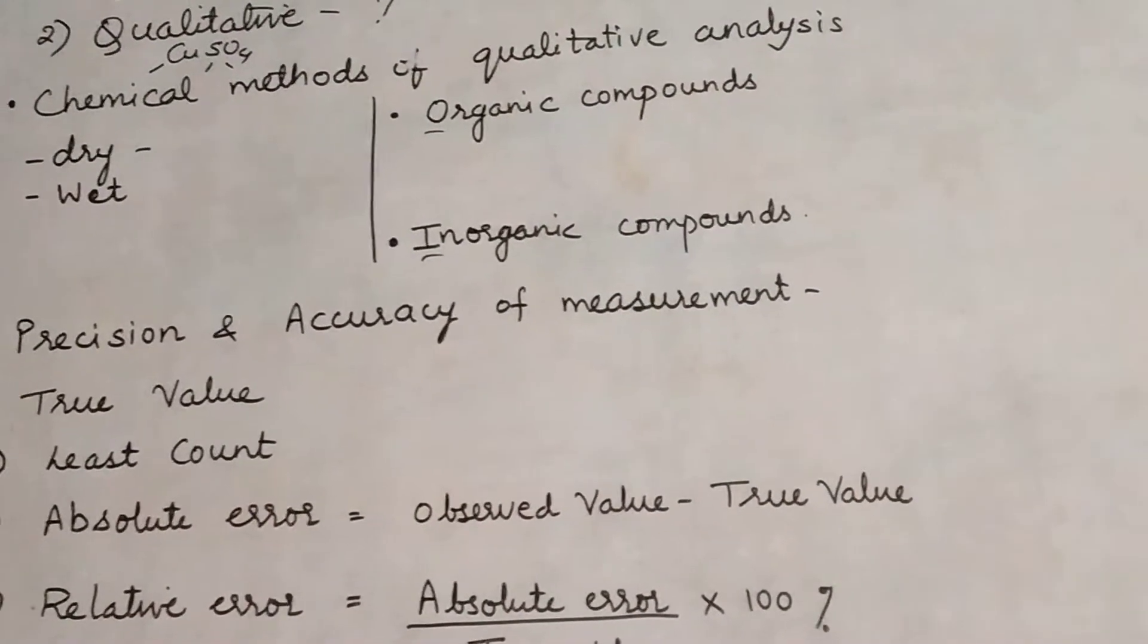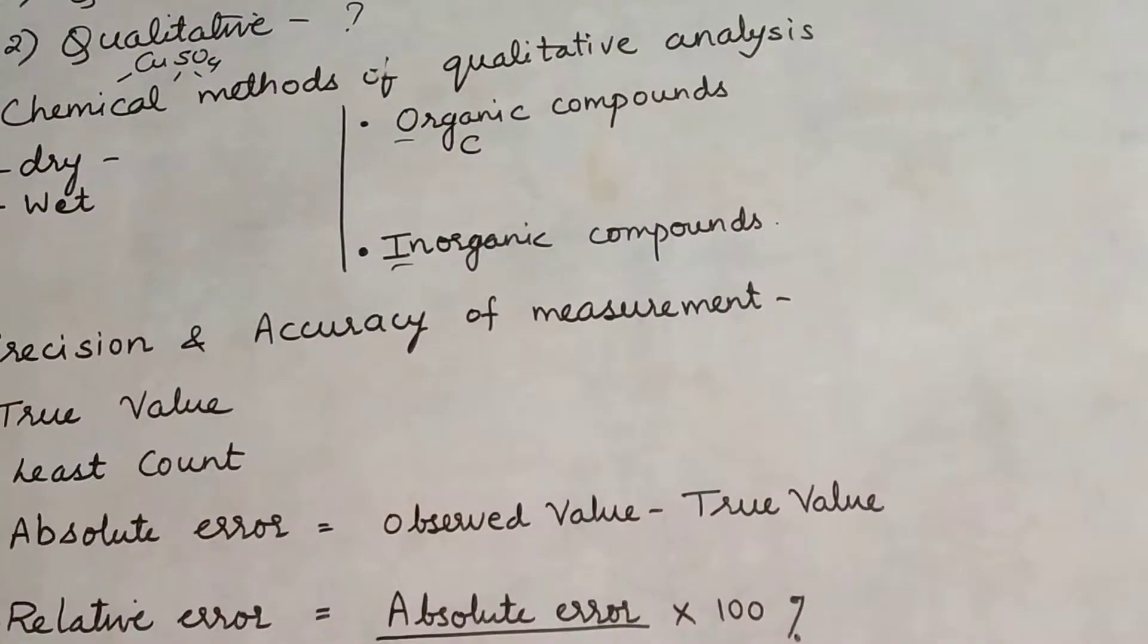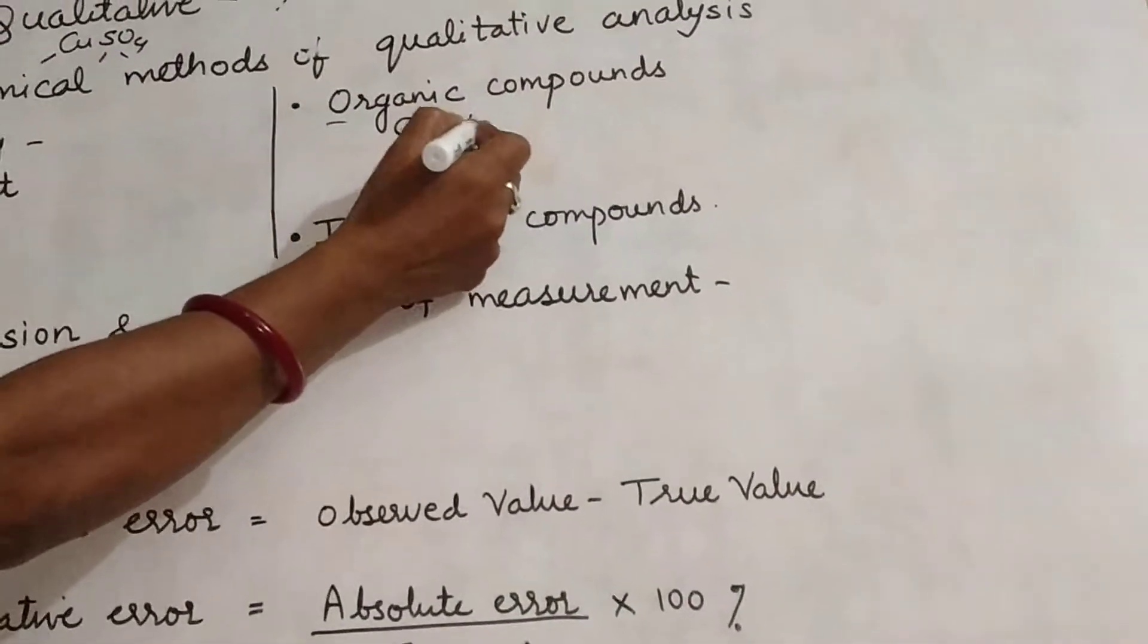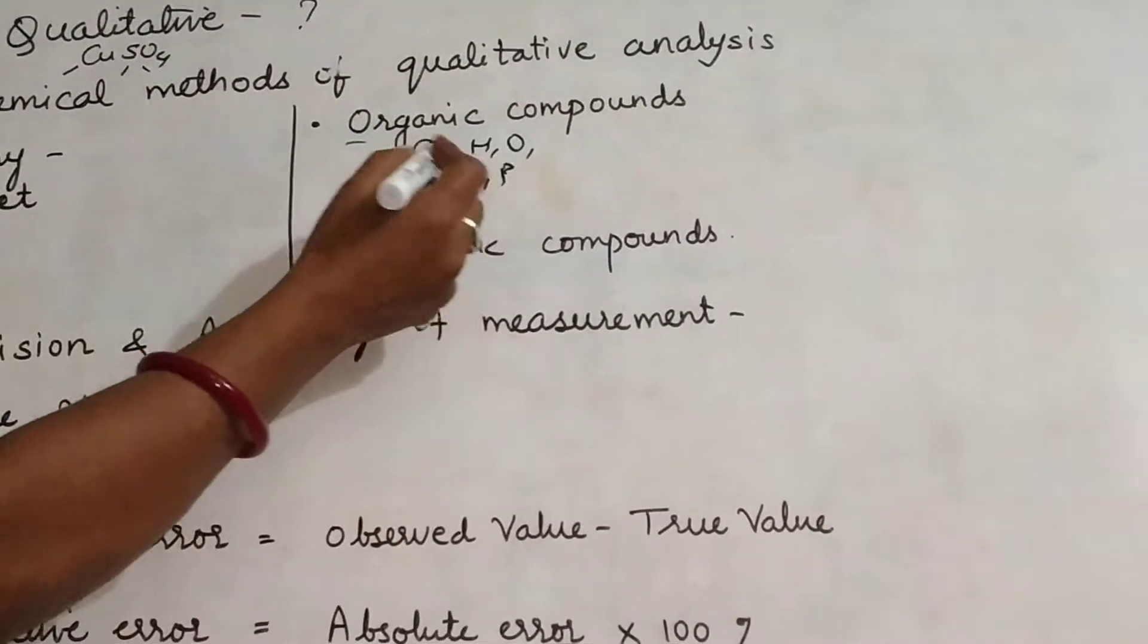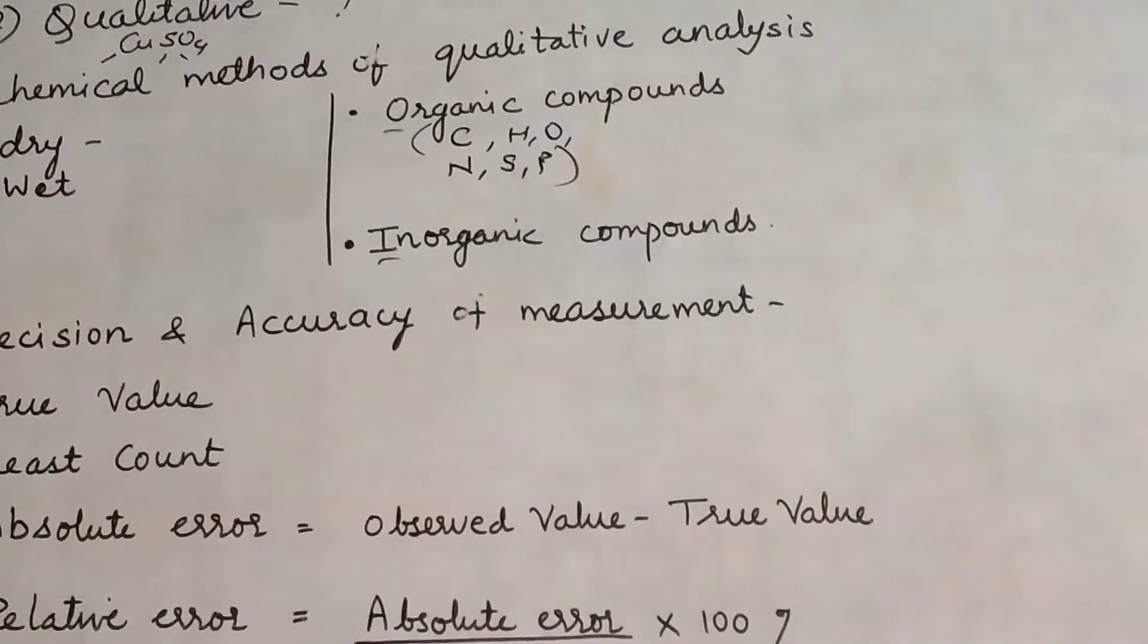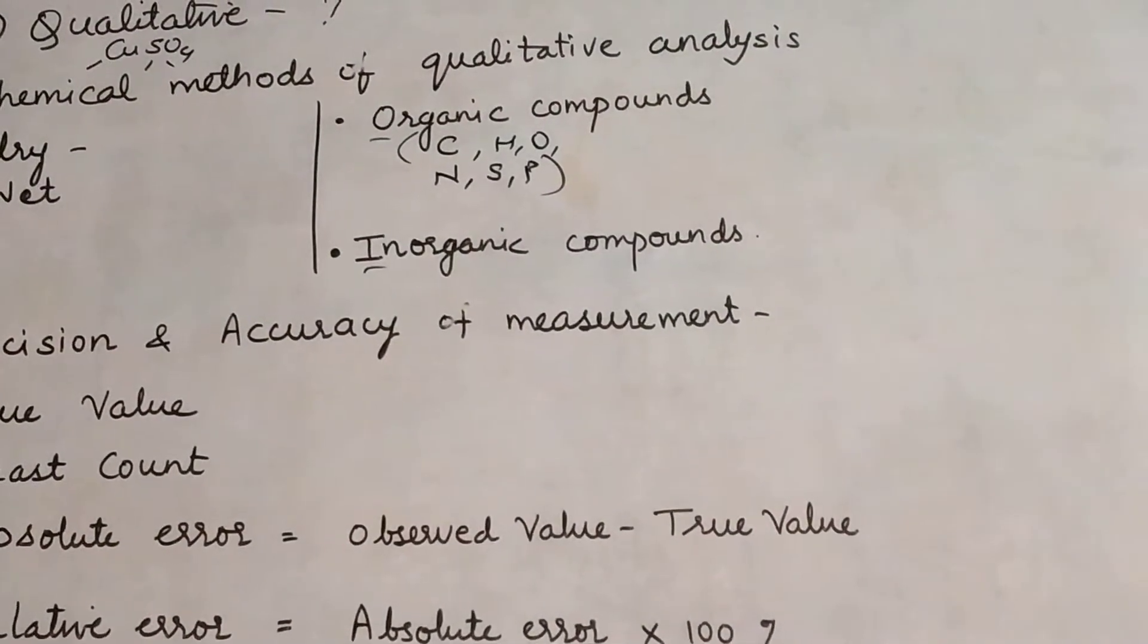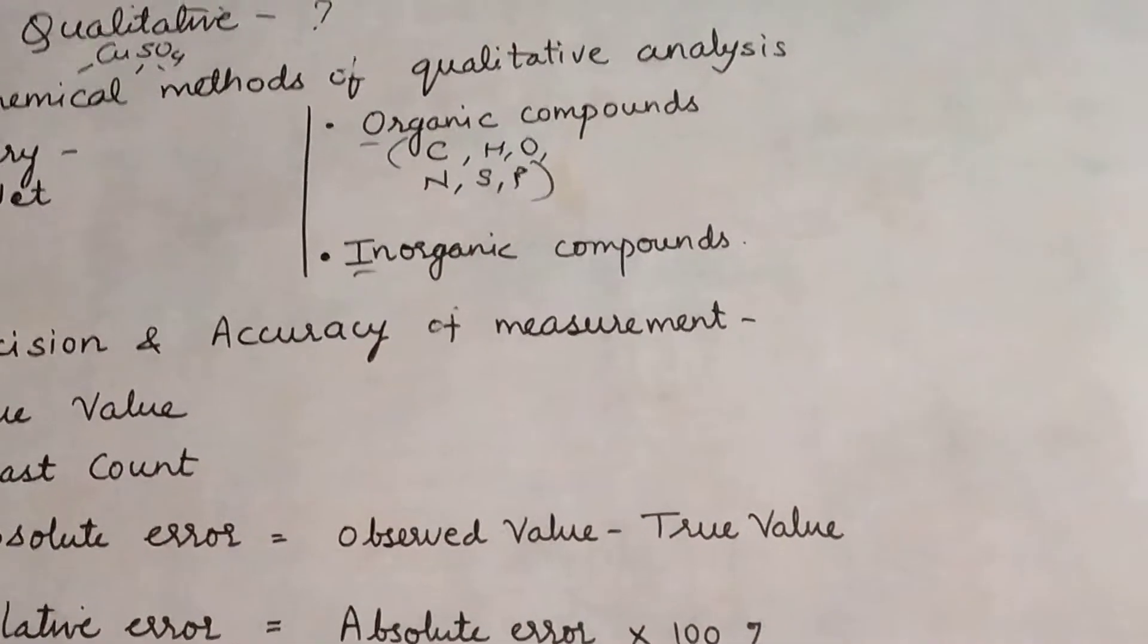Organic compounds are compounds which are made up of carbon. The main element in organic compounds is carbon. Along with carbon we have hydrogen, oxygen, nitrogen, sulfur, phosphorus etc. present. Such compounds are called organic compounds. Carbon is the main element that is present.